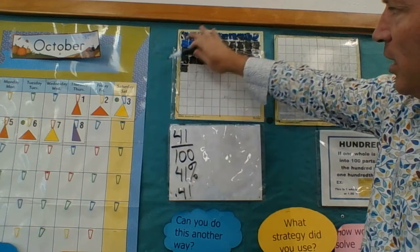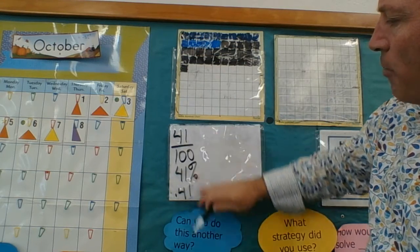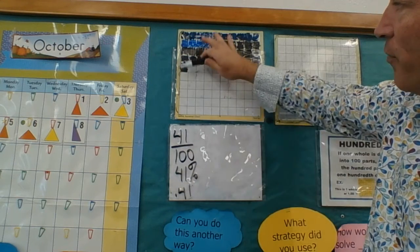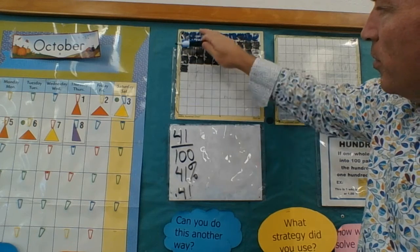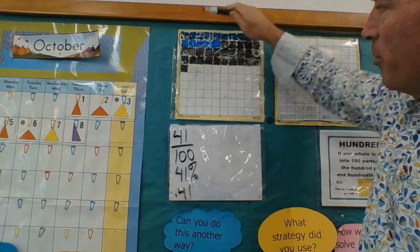How all of these are abstract representations of 41 out of something that's been cut up into 100 pieces.